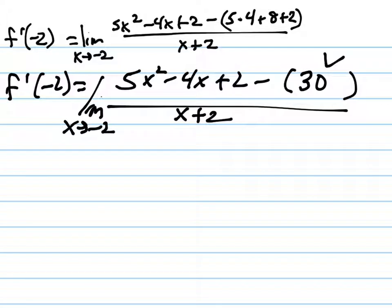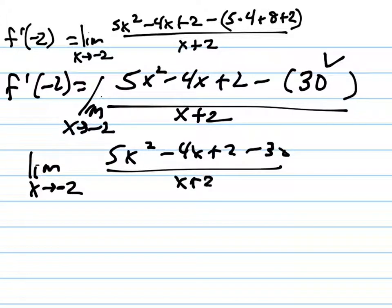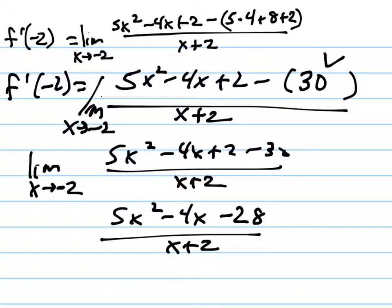Notice that I can't actually plug in negative 2 for fairly obvious reasons, but let me see what I can do here. So the limit as x approaches negative 2 of 5x squared minus 4x plus 2 minus 30, plus 2 minus 30 can be simplified in the next step. 5x squared minus 4x, 2 minus 30 is negative 28, over x plus 2.